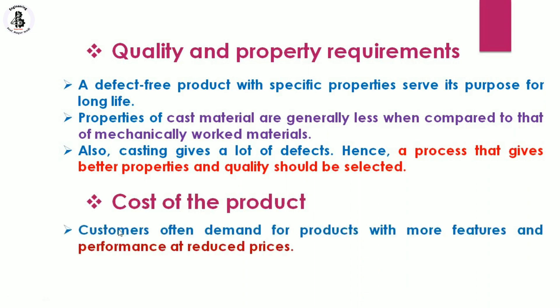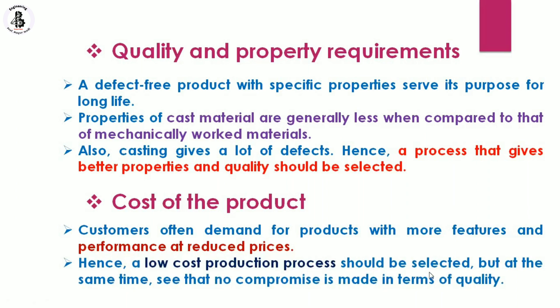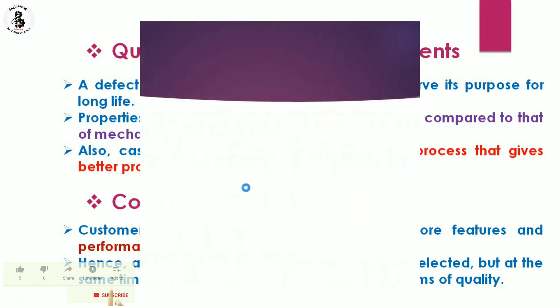The last and important factor is cost of the product. Customers often demand products with more features and better performance at a reduced price. You should always aim for minimum price. You can only control cost through the selection of the production method, because the selected material depends solely on the product's requirements and loading conditions — we do not compromise on material selection. We should only control which production process is used to manufacture components with the best quality at minimum price. Hence, a low-cost production process should be selected, but with no compromise in terms of quality.